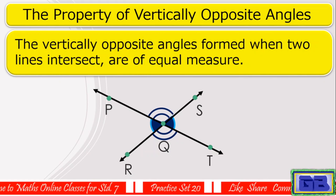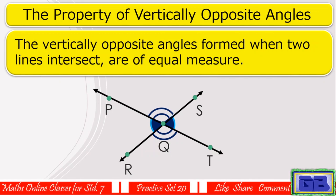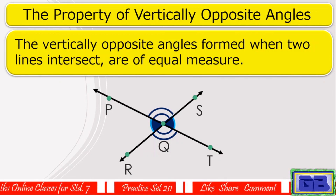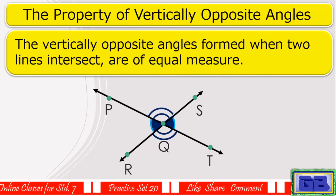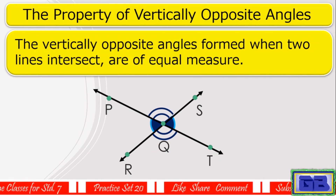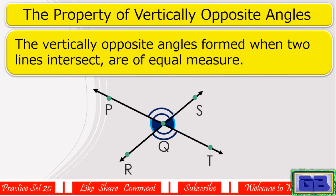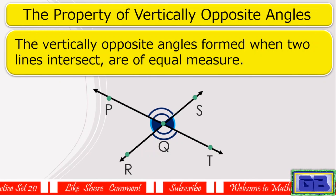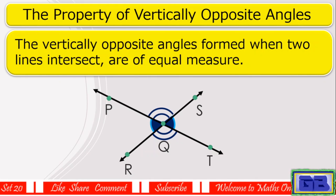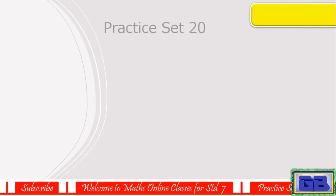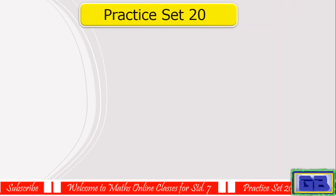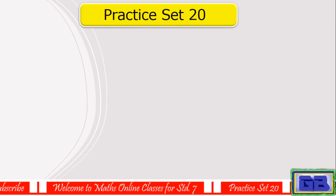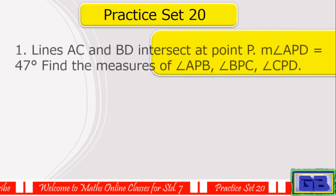The vertically opposite angles formed when two lines intersect are of equal measure. Let us solve Practice Set 20.